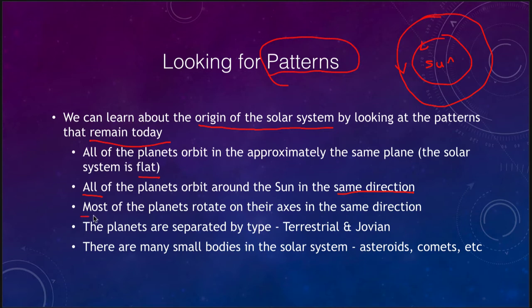Most, but not all, of the planets also rotate on their axes in the same counterclockwise direction. So not only are they going around the Sun in the same direction, but they rotate in the same direction — meaning there is some overall motion to the solar system that is probably a remnant of the original material that formed the solar system billions of years ago.